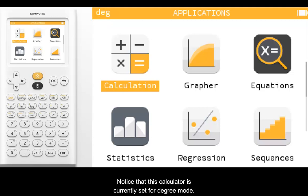Notice that this calculator is currently set for degree mode. Let's go to settings to change it to radian mode.